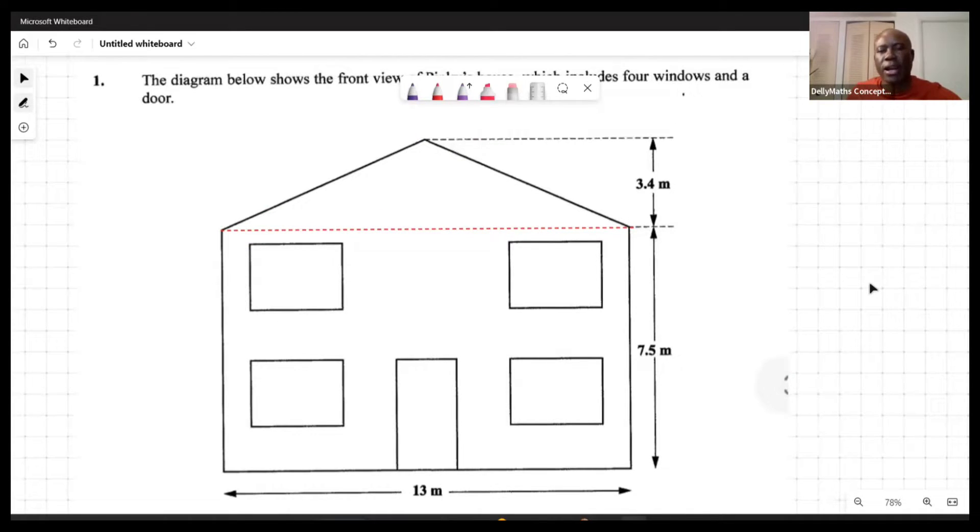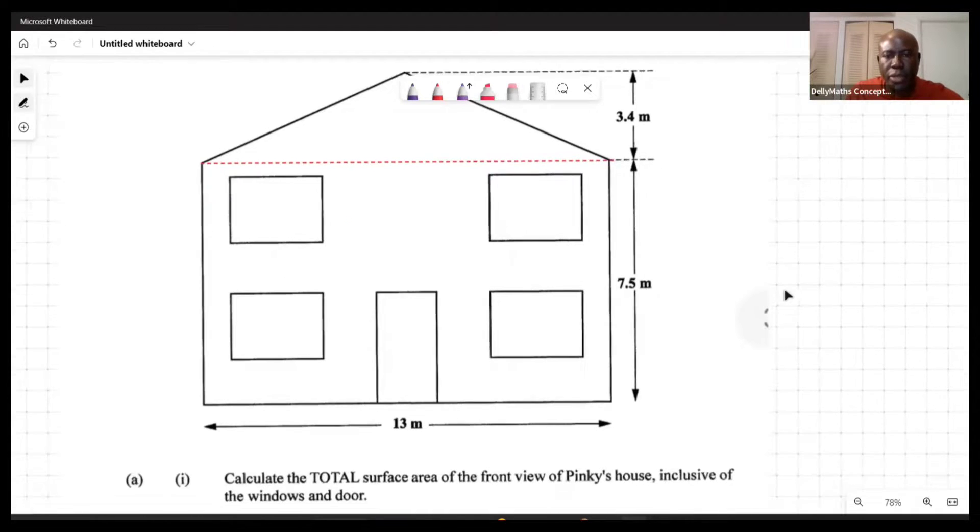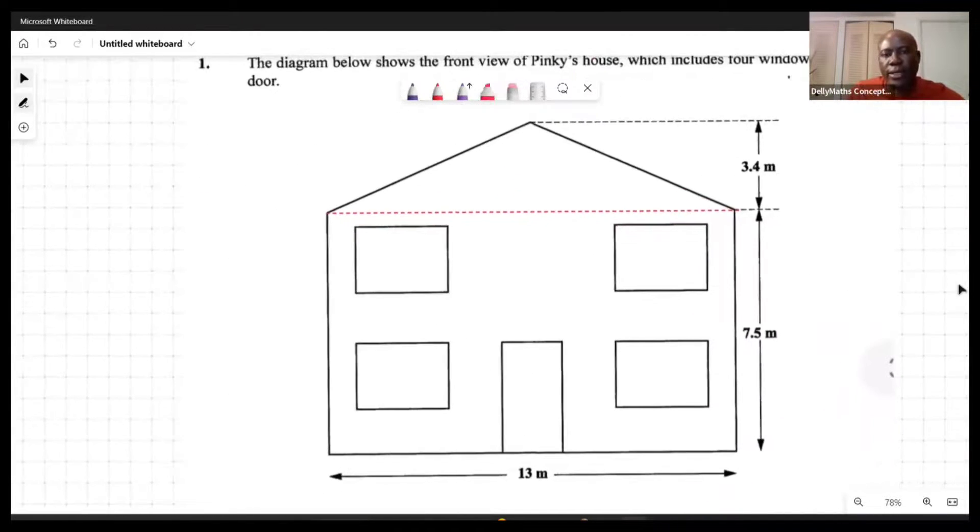So it's a rectangle and a triangle. But what we want to do is to be able to find the area of these two shapes and then combine them. And then we would have had the surface area for the front view, including the doors and the windows.